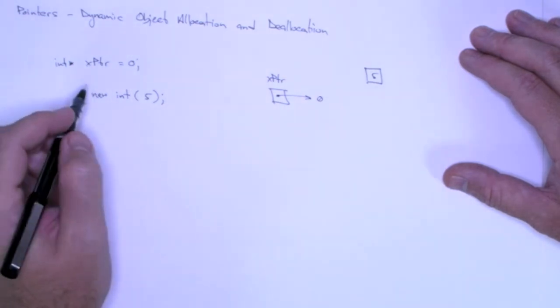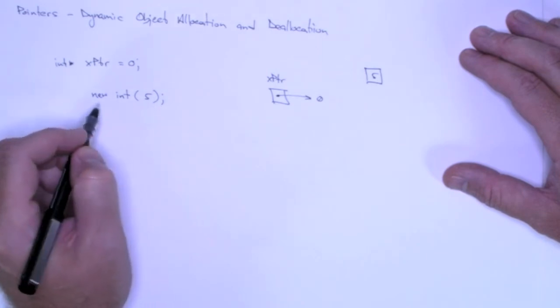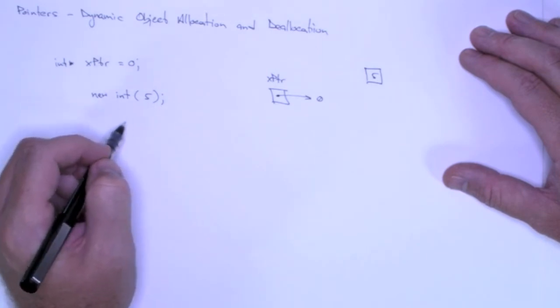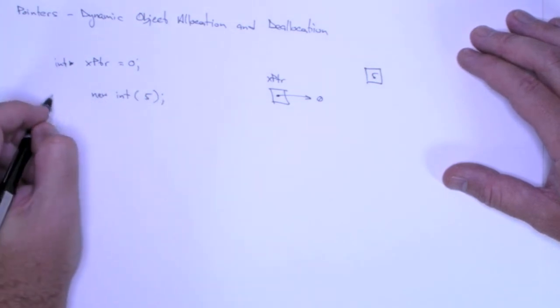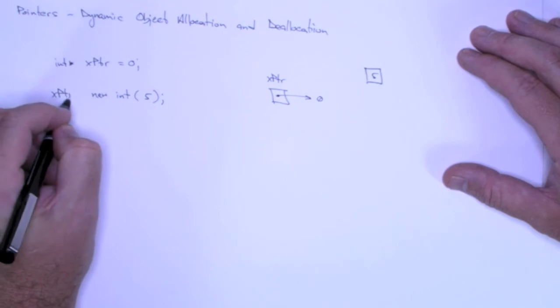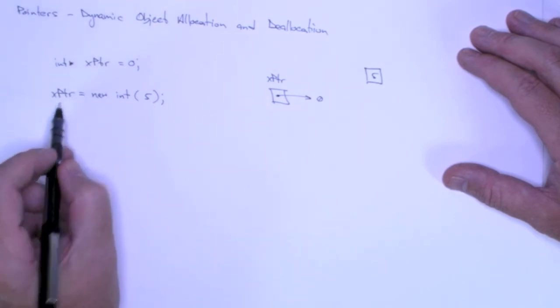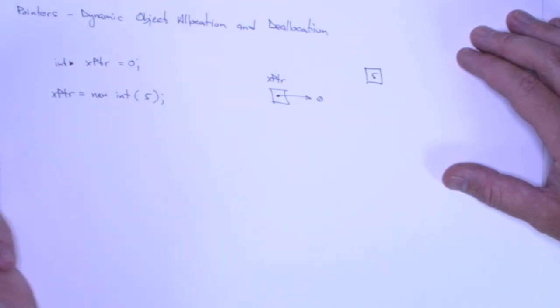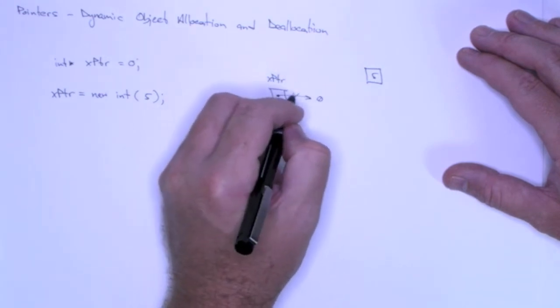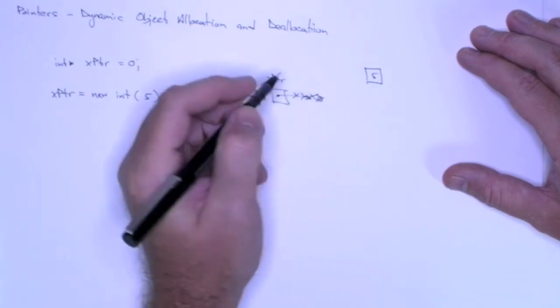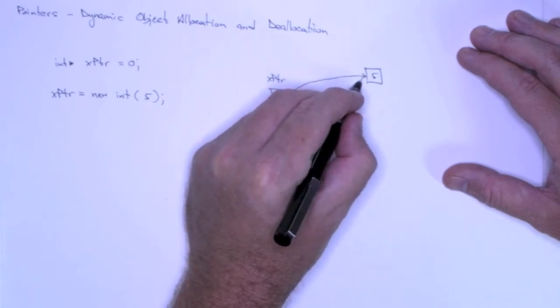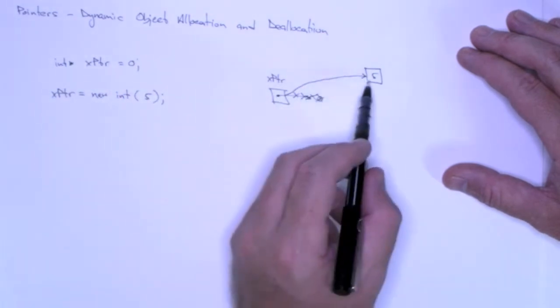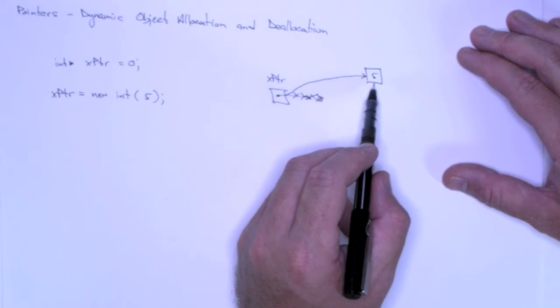A lot like the address operator. So this is analogous to using the address operator on x. Since this returns an address, we can use it in an assignment. And we can store that address in x pointer. Now instead of pointing to null, x pointer will have as its value the address of where the new operator stored the integer object 5.